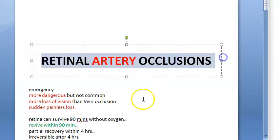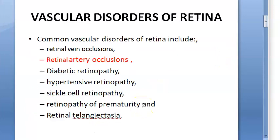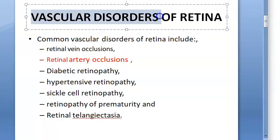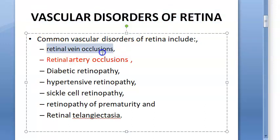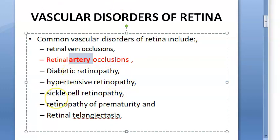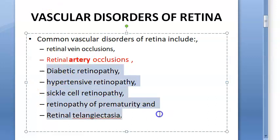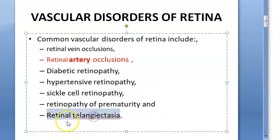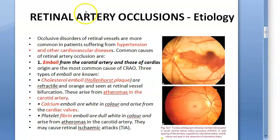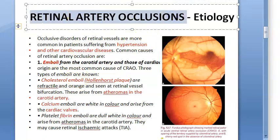In this video, we look at retinal artery occlusion as part of vascular disorders of the retina. We've already seen retinal vein occlusion; now we have retinal artery occlusion, which is a more serious condition though not very common. Other conditions in this group include diabetic retinopathy, hypertensive retinopathy, sickle cell retinopathy, retinopathy of prematurity, and retinal telangiectasia.